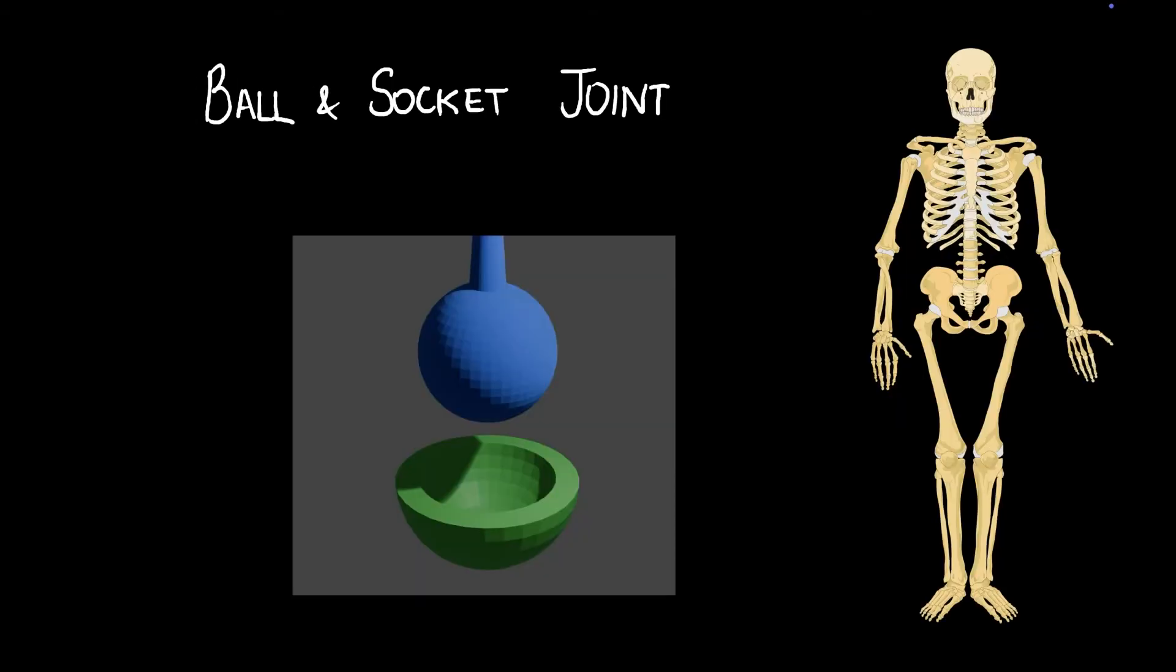Now let's go to the ball and socket joint. The ball and socket joint has two components, the ball and the socket. The ball can snugly fit into the bowl-shaped socket like this. And once it fits in,